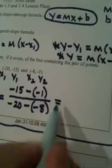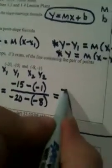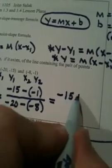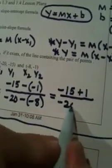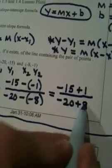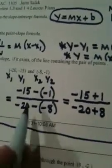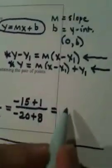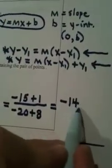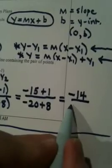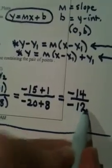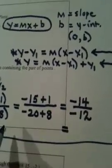And now we just have to be careful with our arithmetic. On top, we have -15 plus 1. On the bottom, we have -20 plus 8. Make sure I'm not messing up on my arithmetic. So, on top, I have -14. On the bottom, I have, what, a -12?